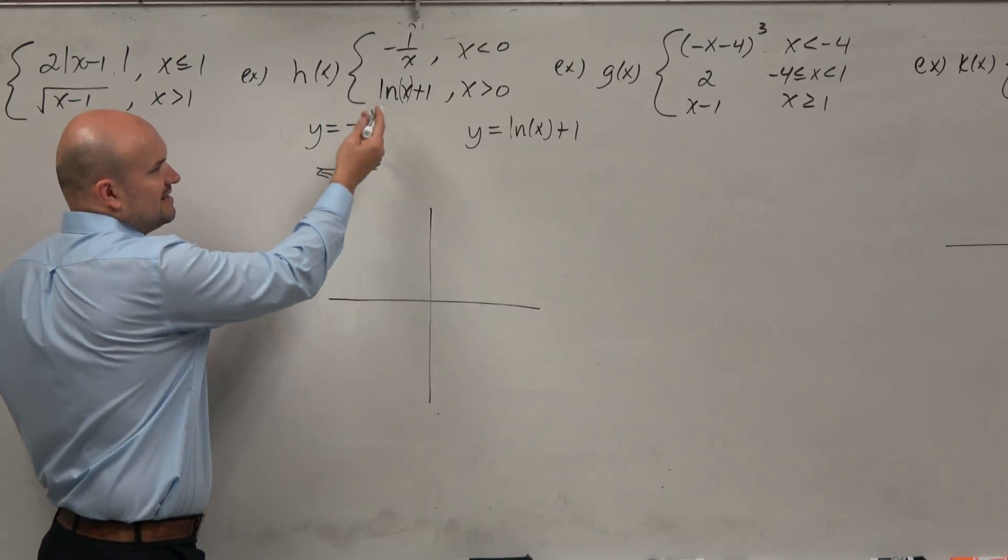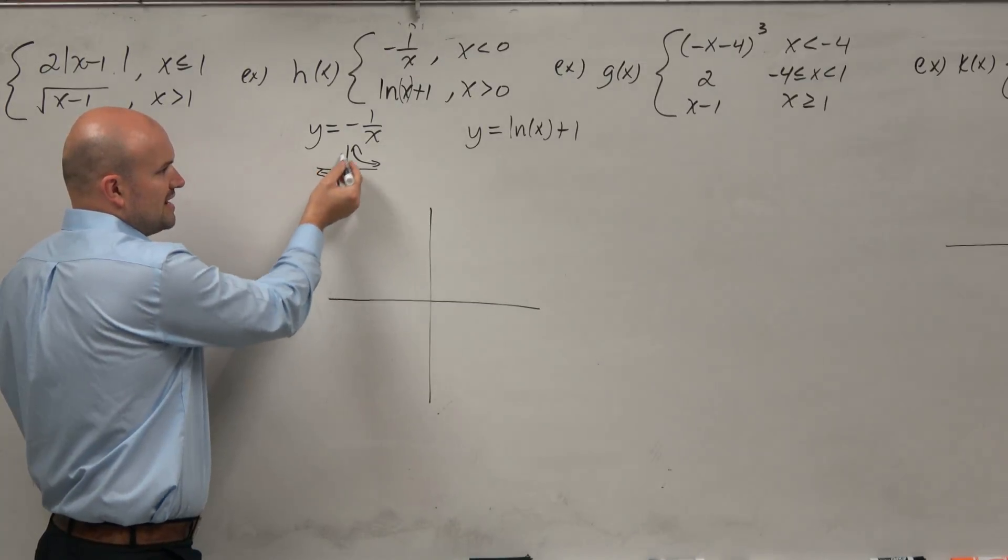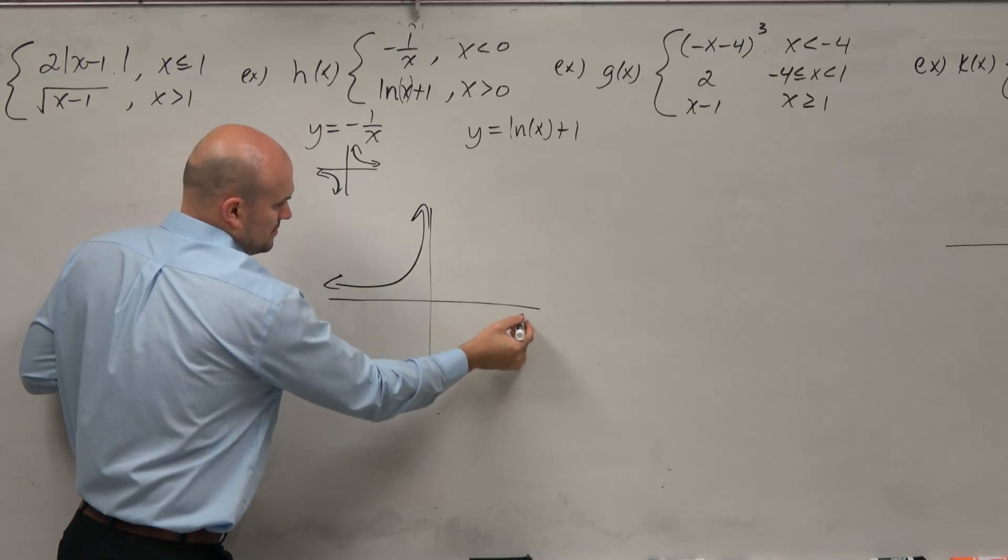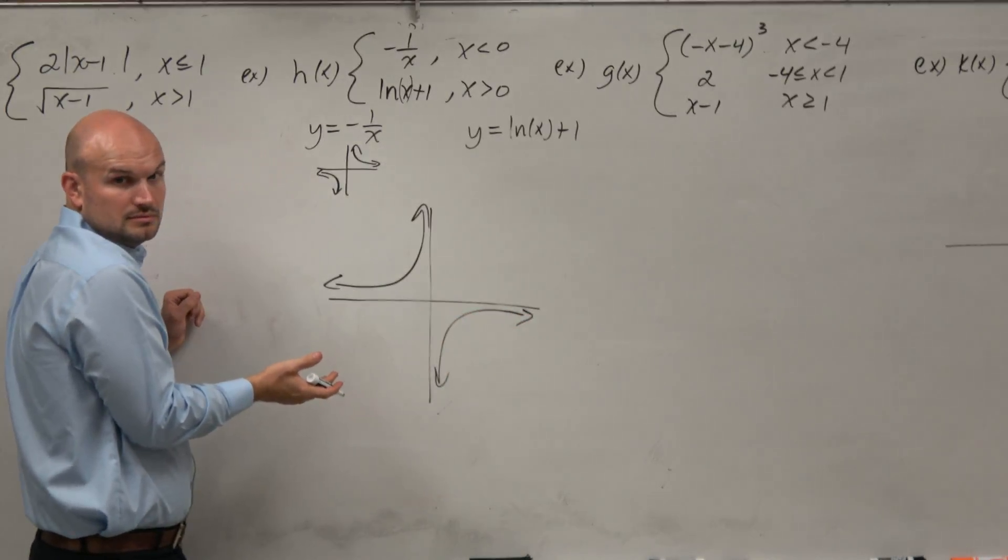So let's say this is a reflection about the x-axis. Therefore, that's up there and that's down there. So now the graph looks like this. Yes? Agreed?